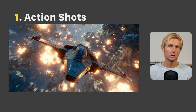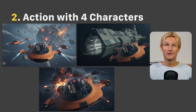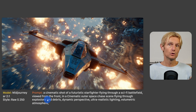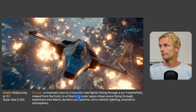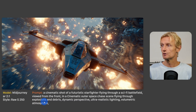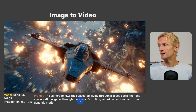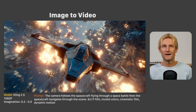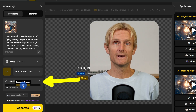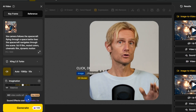Now let's dive into the action shots. First I'll show you the incredible camera moves you can make with Kling 2.5 Turbo. To create amazing camera moves you need to start with a strong base image. I used the prompt: a cinematic shot of a futuristic starfighter flying through a sci-fi battlefield viewed from the front in a cinematic outer space chase scene flying through explosions and debris, plus some style keywords. Then with image to video in Kling 2.5 I used the prompt: the camera follows the spacecraft flying through a space battle, then the spacecraft navigates through the scene — sci-fi film, muted colors, cinematic film, dynamic motion. I found it works best to simply describe the action you want the spacecraft to make. I also tested different imagination values with the slider — each run gives a new result.